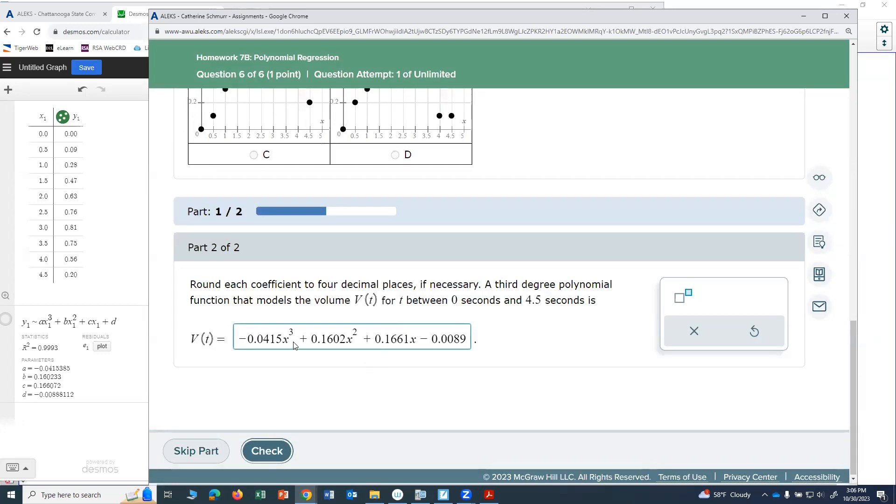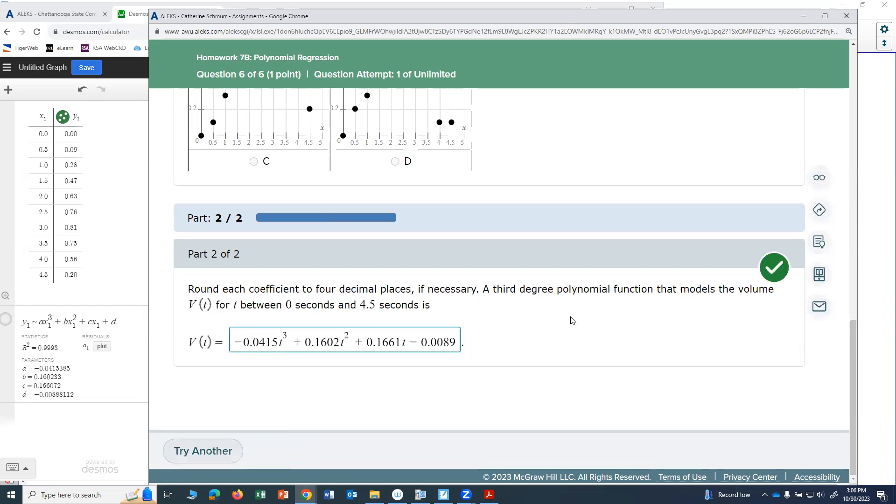It tells me to check the variables. So let's see. Did I miss something in there? X cubed, X squared, and X. Oh, what I missed is that they want T instead of X. So let me go back and change all of these to T's. And I know they wanted T because they say V of T for T between 0 and 4.5. So pay careful attention to the variable.